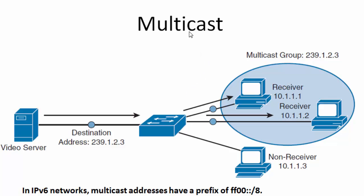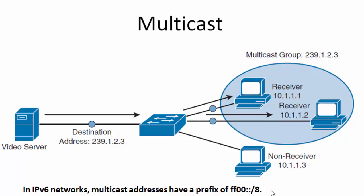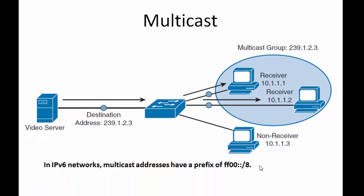One more thing you should know about multicast: in IPv6 networks, multicast addresses have the prefix ff00/8.